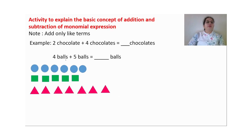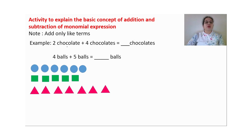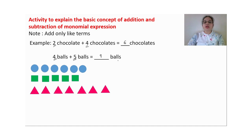Now let us do an activity for addition and subtraction of monomial expressions. For example, you have 2 chocolates and I give you 4 more chocolates — total is 2 plus 4 equals 6 chocolates. We write the variable (chocolates) as well. Similarly, if you have 4 balls and I give you 5 more balls, 5 plus 4 gives you 9 balls.